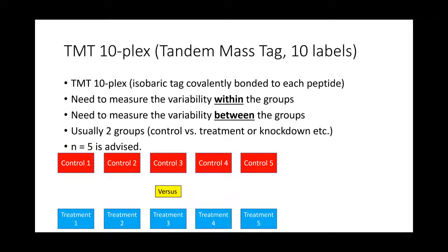A TMT 10-plex means you can have 10 different labels to put on 10 different samples. In this experiment, we still need to measure the variability within the group and between the groups. So even though you have 10 tags, that doesn't mean you're going to have 10 unique samples. Usually we'd have two groups — a control versus a treatment, or control versus a knockdown. Statistics tells us that while an n of five might seem like a lot, in proteomic experiments an n of five or more is very valuable, especially with tissue or other highly variable sample sets. Cell culture sometimes can get away with n equals three.